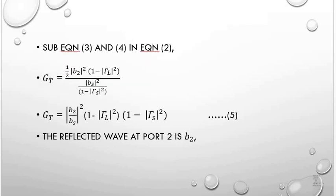Substituting equations 3 and 4 into equation 2, the transducer gain GT equals (1/2)|b2|² times (1 minus |gamma_L|²), divided by |bs|² divided by (1 minus |gamma_s|²). Simplifying, this becomes |b2/bs|² times (1 minus |gamma_L|²) divided by (1 minus |gamma_L|²) times (1 minus |gamma_s|²).